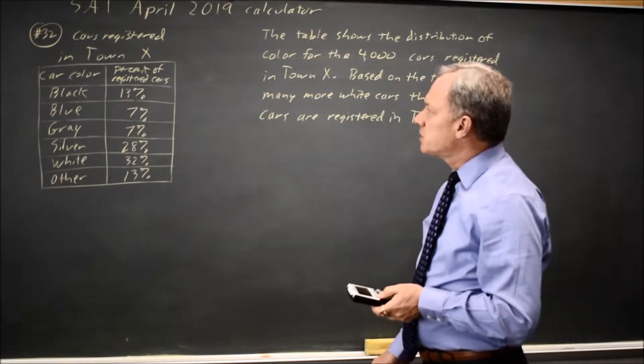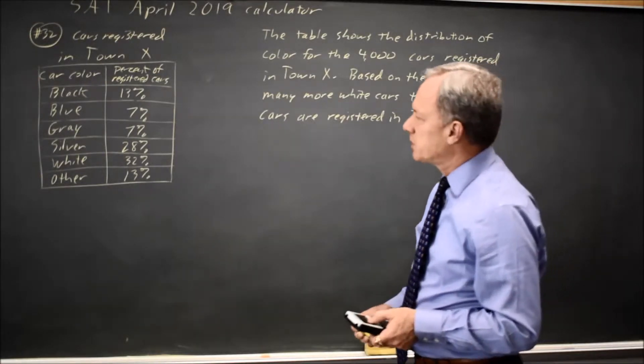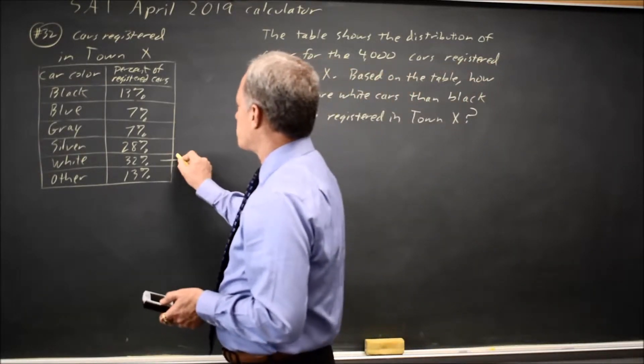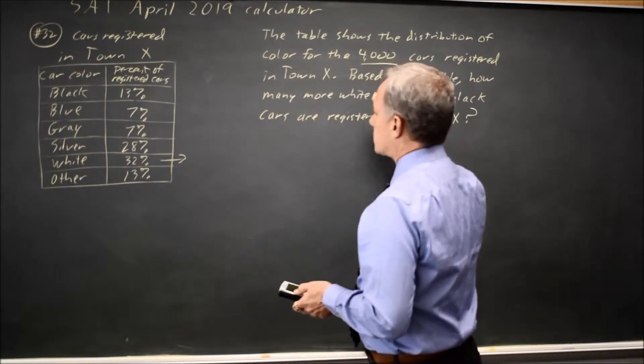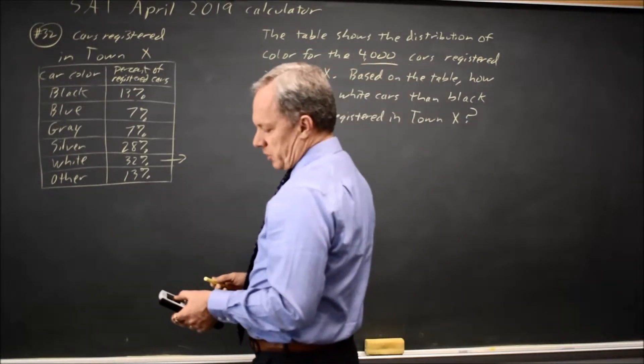And there's two ways of looking at this. One is to find the number of white cars, which is 32% of 4,000 cars, which would be 1,280.